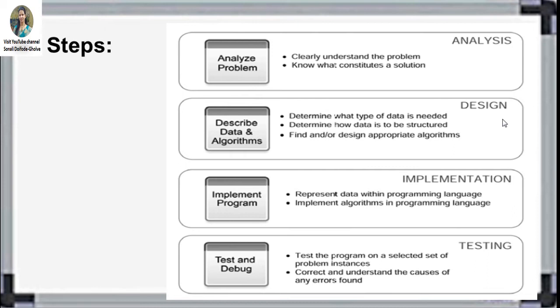The next step is implementation. Implementation means representing the data within a programming language — coding is important now. This phase is known as coding. We will do the code using the appropriate programming language. These steps are the same for all programming languages, regardless of which language you are using. Implementation through coding with the appropriate programming language is how we do the programming for the required problem.